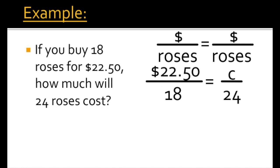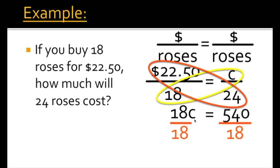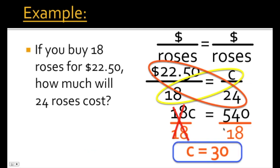Now that we have our proportion set up, we have to follow the two-step process to solve. The first step is to cross-multiply. We multiply 18 times c, which gives us 18c. We then multiply 2250 times 24, and that gives us 540. So now we have 18c equals 540. Step two is to get the variable c by itself. We divide both sides by 18. The 18s cancel out, and 540 divided by 18 gives us c equals 30.